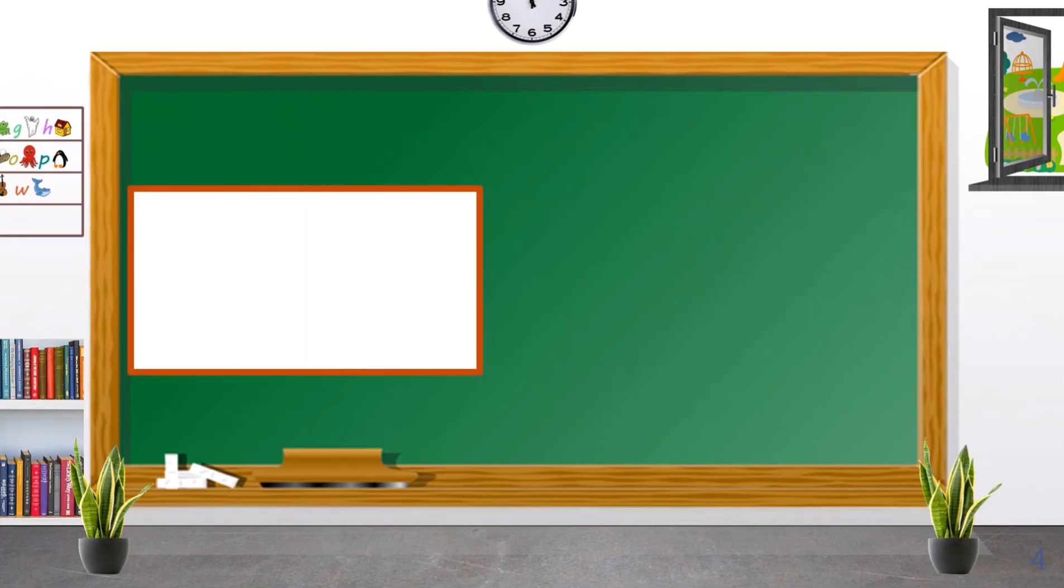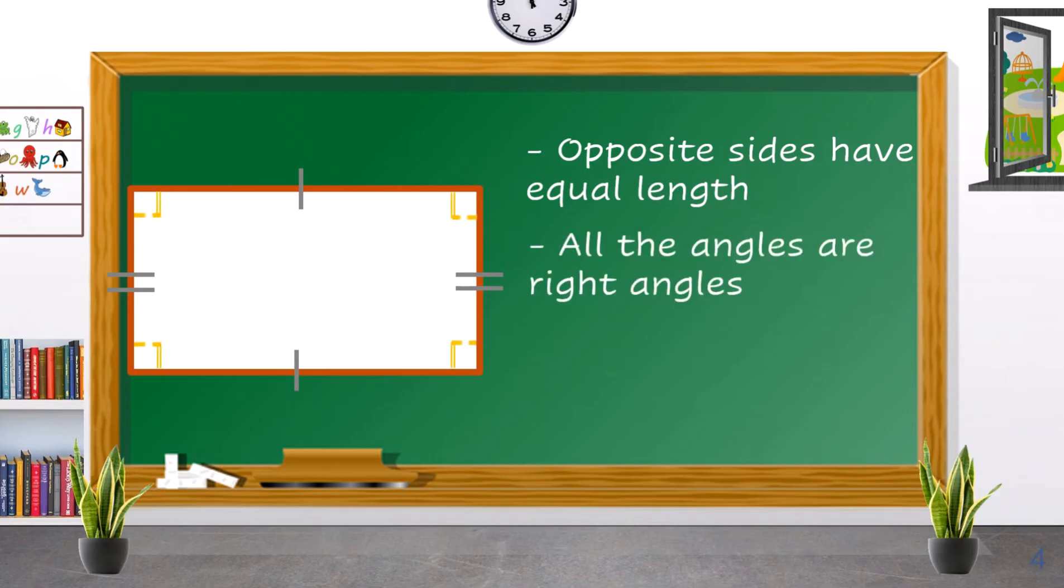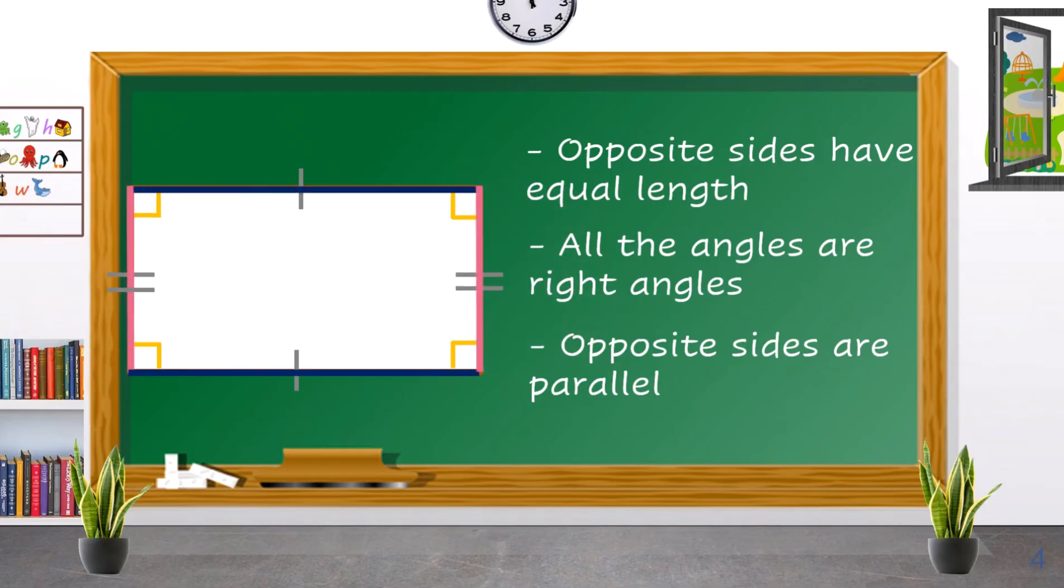The next type of quadrilateral has the properties of opposite sides having equal length, all the angles are right angles, and the opposite sides are parallel. This is a rectangle.